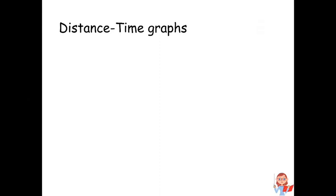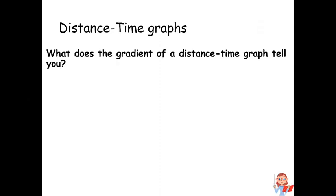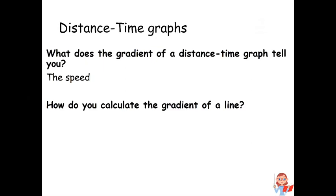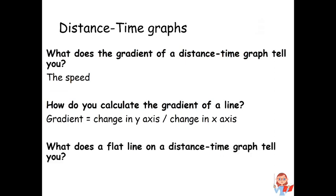Now it's time to go through those key concepts that you're going to need to know for distance-time graphs. What does the gradient of a distance-time graph tell you? The speed. How do you calculate the gradient of a line? The gradient equals the change in the y-axis divided by the change in the x-axis. What does a flat line on a distance-time graph tell you? That the object is stationary, so it's not moving.